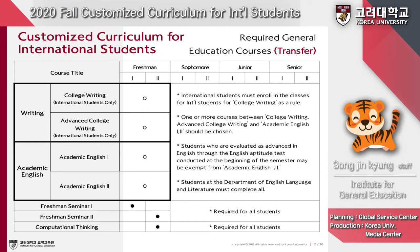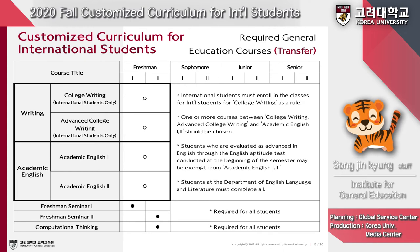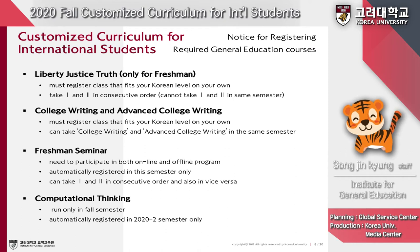Transfer students admitted in 2020 may also take Liberty Justice Truth, but it will not count as a required general education course. We have sent all international students entering Korea University in Fall 2020 an email notifying them of their Korean proficiency level and advice for selecting the right class. For Liberty Justice Truth registration, you must register for the class that fits your Korean level on your own. For example, if your Korean level is foundation, you cannot take intermediate or advanced level classes.